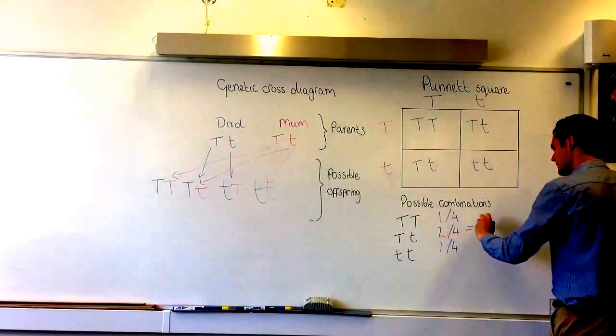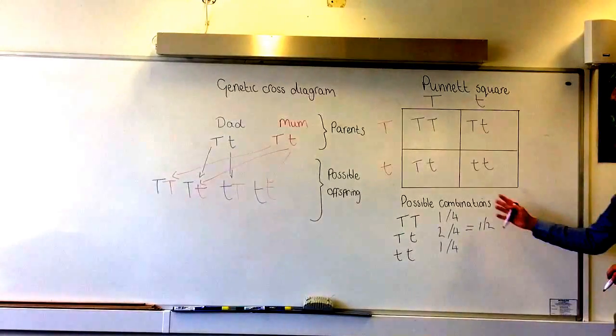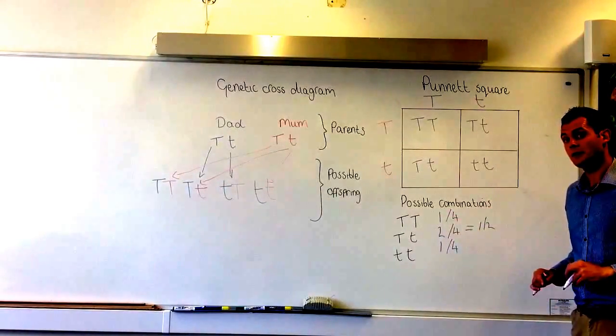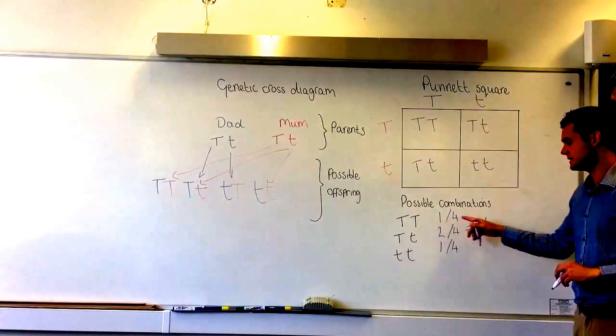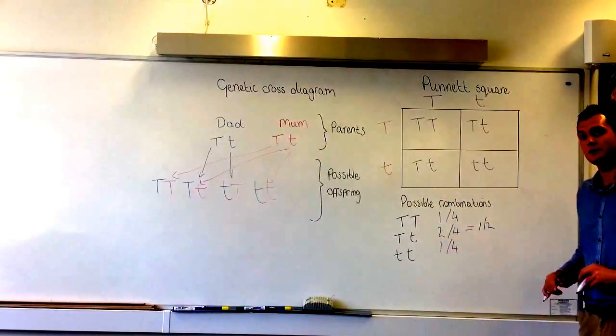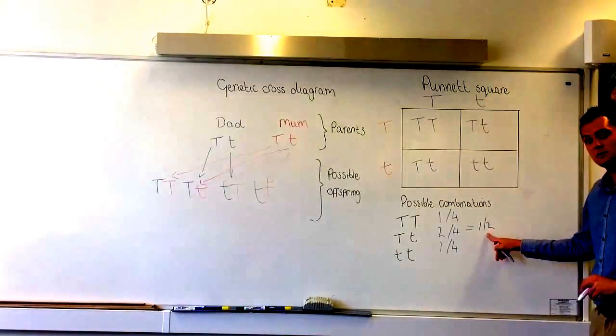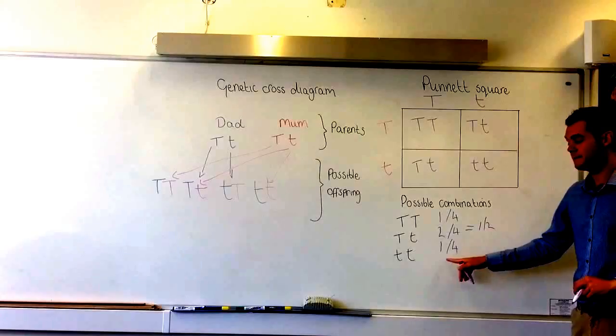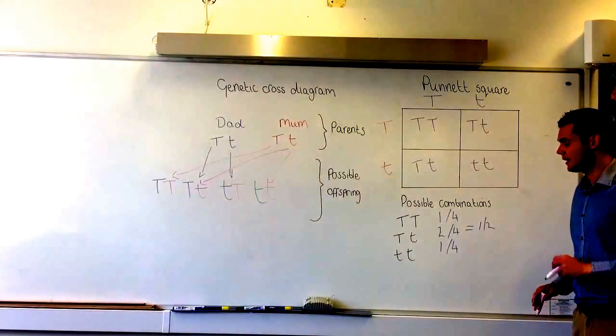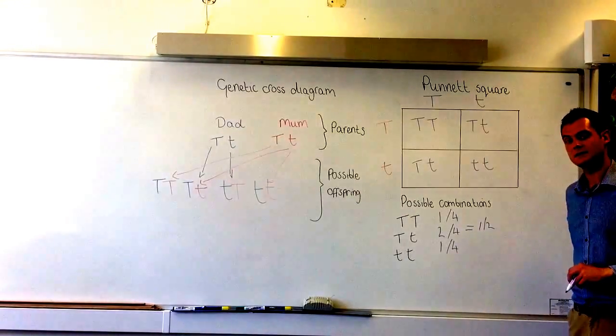Two goes into four twice, so that's a one in two chance. The probability of being a tongue roller with two dominant T's is one in four. The probability of being a tongue roller with one dominant T and one recessive t is one in two. And the probability of being a non-roller with two recessive genes is one in four.